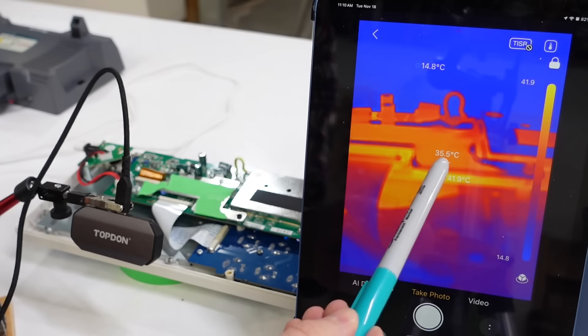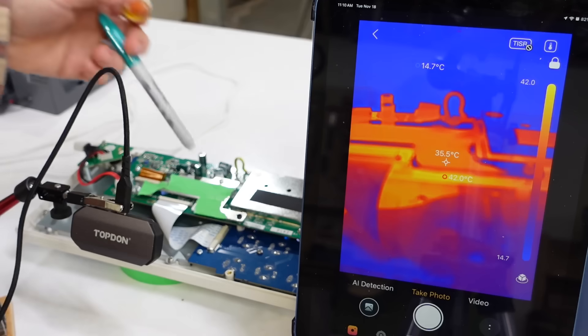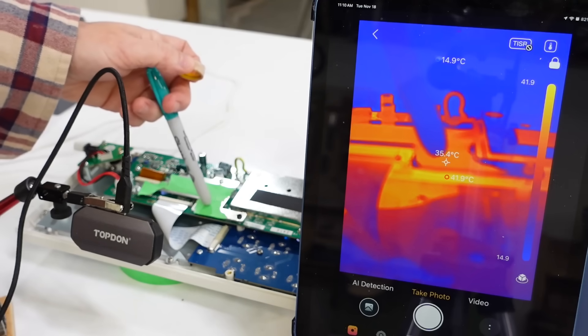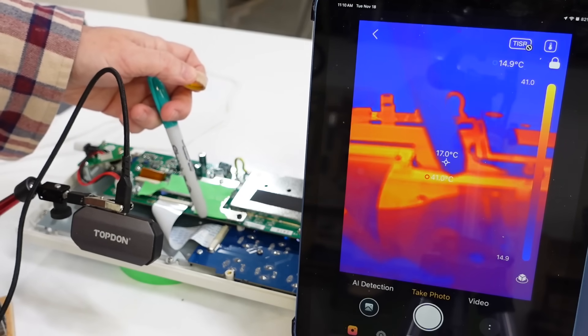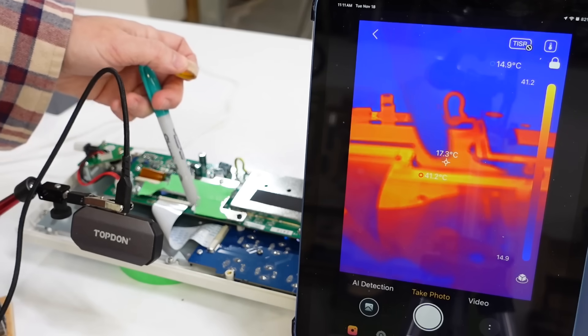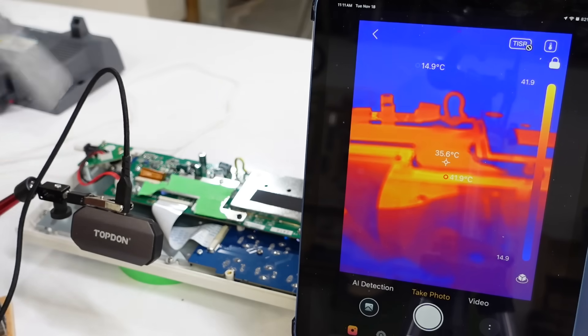Now looking at this close up in the middle we have 35.5 degrees which corresponds to basically the masking tape on the heat sink. Below that we see 42 degrees and that tells me the PCB below is actually a bit warmer.